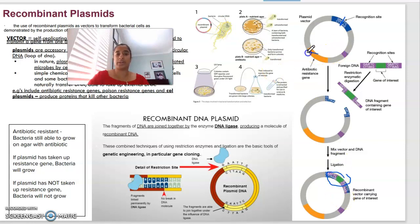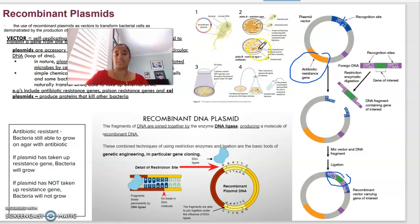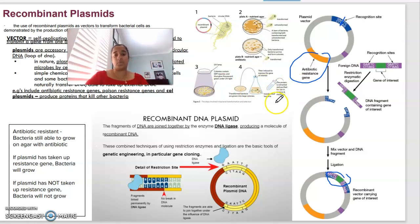We insert that recombinant plasmid — now containing our gene of interest — into bacteria. We also include an antibiotic resistance gene to help determine whether our gene of interest has been taken up. If the gene of interest is taken up, so too is the antibiotic resistance gene. When grown on an antibiotic agar plate, only bacteria with the antibiotic resistance gene — and therefore the gene of interest — survive. We can grow those colonies, extract them, and extract the gene of interest. For example, this is how we can mass-produce insulin.